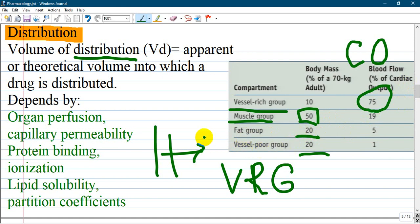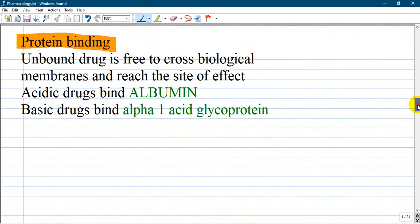It's important for anesthesiology as when administering an anesthetic, the brain is equilibrated or has the same concentration through distribution of the drug and the patient is going to be anesthetized. Protein binding - unbound drug is free to cross biological membranes and reach the site of effect. When drug is bound to protein, it cannot pass any membranes as proteins do not pass through membranes. Acidic drugs bind albumin and basic drugs bind alpha-1-acid glycoproteins, like local anesthetics.